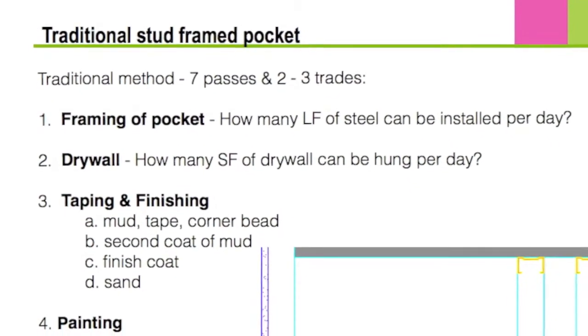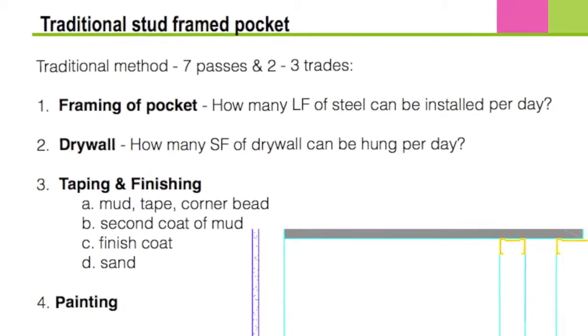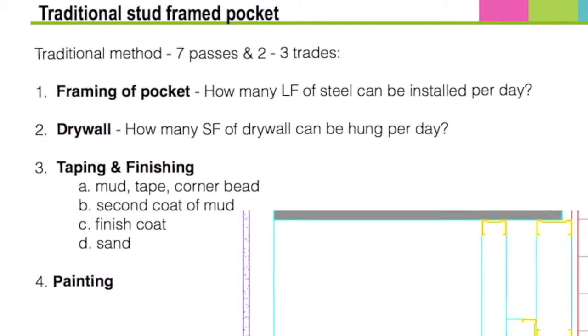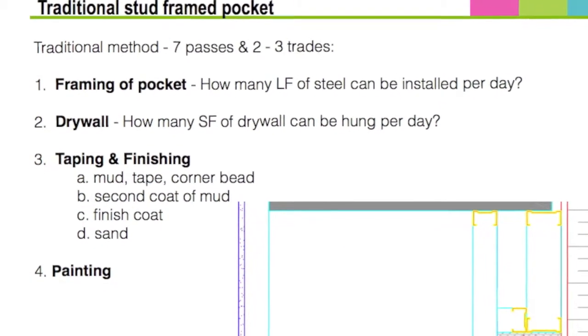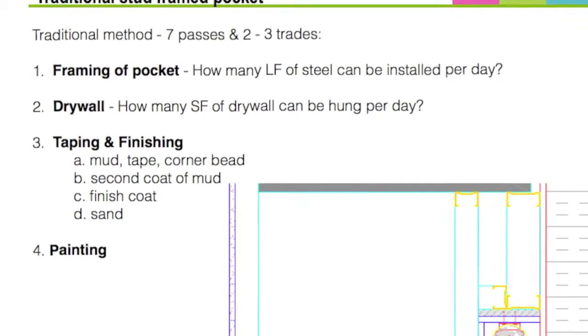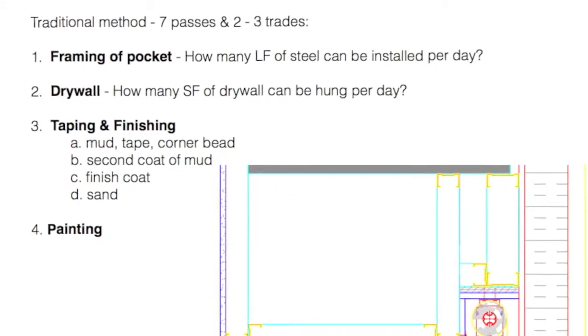Constructing perimeter pockets currently involves seven passes and two to three trades. First, frame with stud and track, then drywall followed by corner bead, taping, and mud. Next, a second coat of mud, then a third coat of mud, followed by sanding, and finally painting.